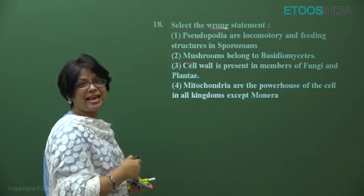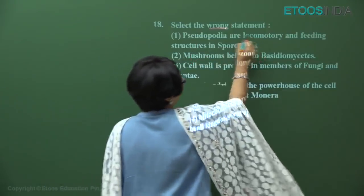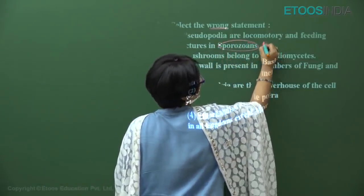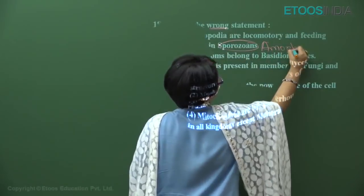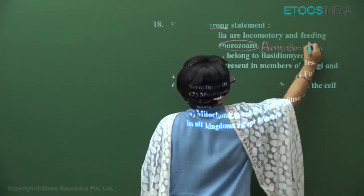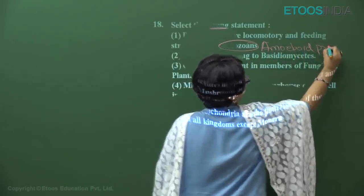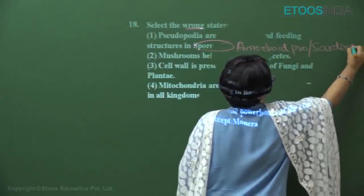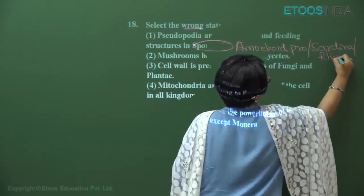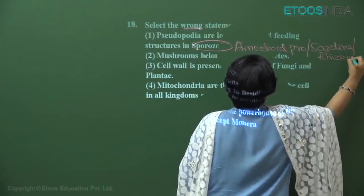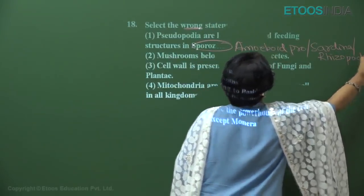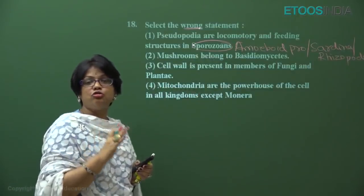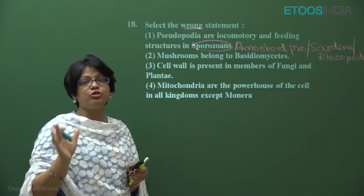Yes, pseudopodia are locomotory and feeding structures in amoeboid protozoa — which is called the Sarcodina class or Rhizopoda class — but not in Sporozoa. So they are not found in Sporozoa. Sporozoa are protozoa which do not have any locomotory organ.